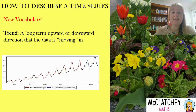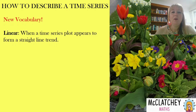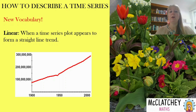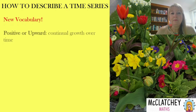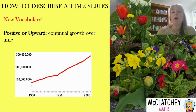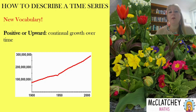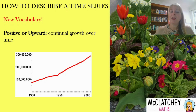In this particular diagram, for example, you can see something that is a general upward trend over time. We also talk about linear trends, which is when a time series appears to follow a straight line over time. This particular graph is following a roughly straight-line trend. When our data moves upward in a positive direction, that means continual growth over time — it could be growth in temperatures, in sales, or in profits, depending on the context.